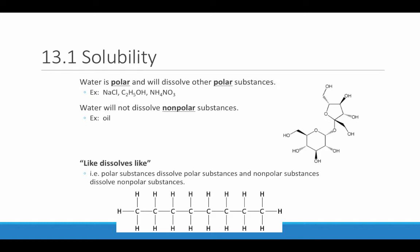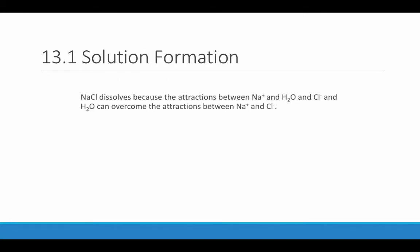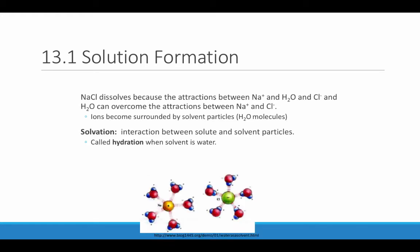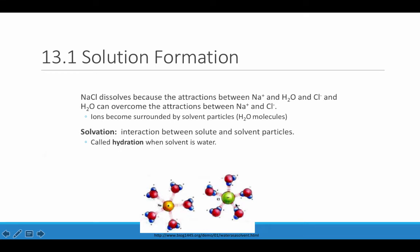Water is a good solvent for polar substances because it's able to surround and attract charged ions, or it's able to hydrogen bond with molecules capable of hydrogen bonding. NaCl dissolves because of the attractions between the positive sodium ions and water and the negative chloride ions and water. These attractions are strong enough to overcome the attractions between Na⁺ and Cl⁻. The ions then become surrounded by solvent particles. This process is called solvation — the interaction between the solute and the solvent particles. More specifically, we can call it hydration when the solvent is water. Our positive sodium atom is attracted to and surrounded by the negative ends of water molecules, whereas the negative chloride ion is attracted to and surrounded by the positive ends of the water molecules.